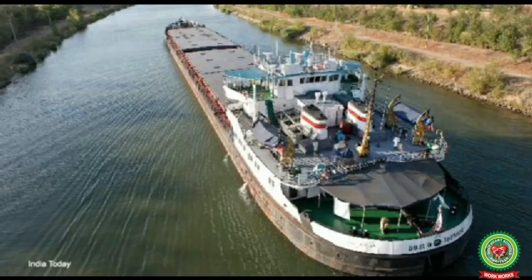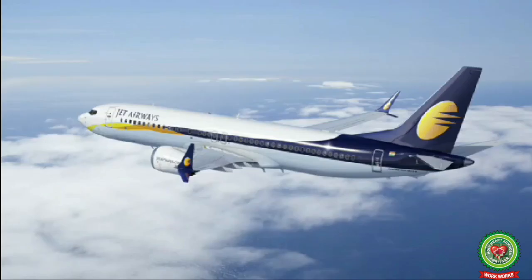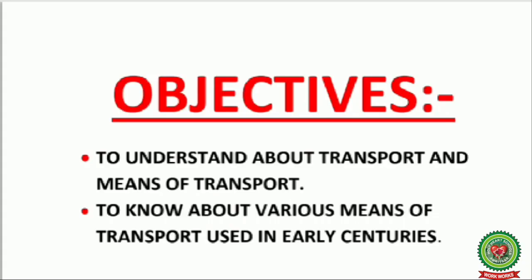In the 21st century, India has a well-developed network of roads, railways, waterways and airways. Let's focus on today's objectives: first, to understand about transport and means of transport; second, to know about various means of transport used in early centuries. Before starting with reading of the chapter, let's have a look at terms related to today's topic.